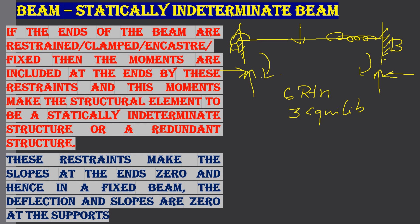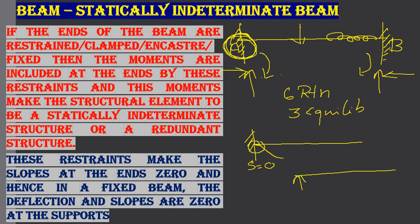Because of these restraints, there will be moments at the ends, and these restraints make the slopes at the ends zero. When taking the deflection of a fixed beam, the slope will be equal to zero, whereas for a simply supported beam the slope is not equal to zero at the support. So in a fixed beam, the deflection and slope are both zero at the supports.